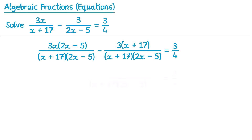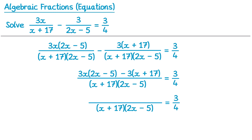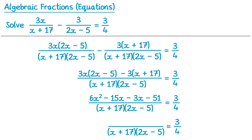Now we have that common denominator we can write them as one big fraction. So we've got 3x and then brackets 2x minus 5, then a subtraction in between them and 3 lots of x plus 17. Next we're going to expand out that numerator. We have 3x multiplied by 2x, that's 6x squared. 3x times negative 5, that's negative 15x. Negative 3 times x is negative 3x. And negative 3 multiplied by positive 17 is negative 51. There's a little bit of simplifying: the 6x squared stays, but we can simplify negative 15x subtract 3x which is negative 18x, and then subtract 51.